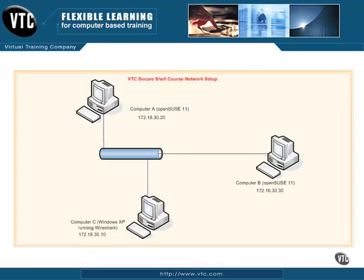Here's a small network diagram of how we have the lab set up — very simple. We've got our two OpenSUSE 11 computers, Computer A and Computer B. Computer A is 172.16.30.20, connected over an Ethernet network. Computer B is also an OpenSUSE 11 Linux box at 172.16.30.30. Our Windows XP box, Computer C, is 172.16.30.10.